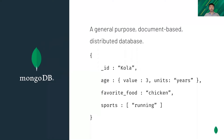MongoDB is a general-purpose, document-based, distributed database. Here is an example of a JSON-like document, including a sub-document and an array.